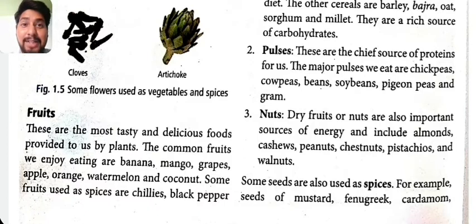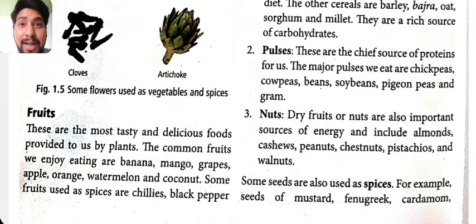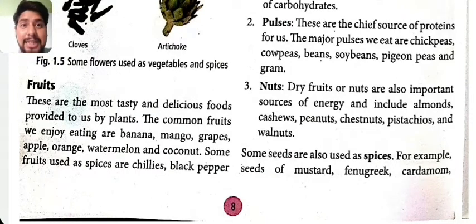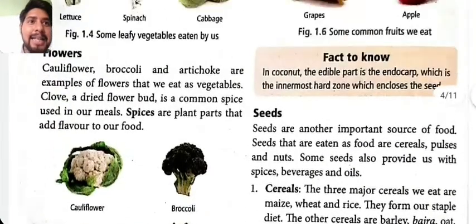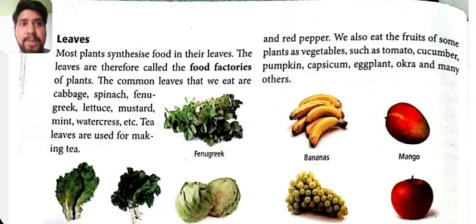Fruits are the most tasty and delicious parts provided to us by plants. Common fruits we enjoy are banana, mango, apple, orange, watermelon, and coconut. Some fruits are also used as spices, such as chili, black pepper, and red pepper. We also eat fruits from some plants that we commonly call vegetables, such as tomato, cucumber, pumpkin, capsicum, eggplant, and okra.